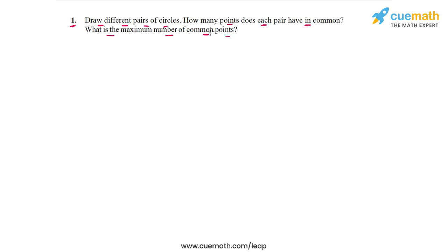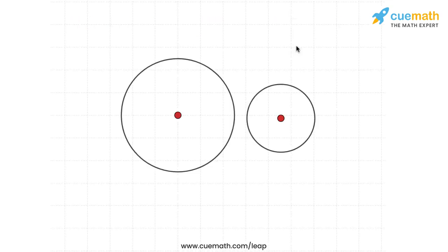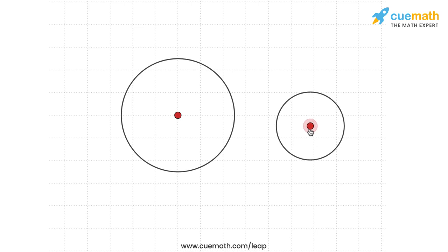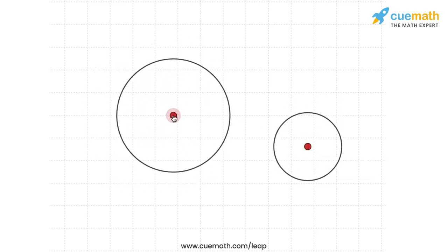We are going to consider different configurations of two circles and find out how many points are common for each configuration. Here is a simulation showing two circles with their respective centers. Right now the circles don't intersect each other — they lie completely outside of each other, and in such a configuration the circles have no point in common. So as long as the two circles stay outside of each other, they have no point in common.